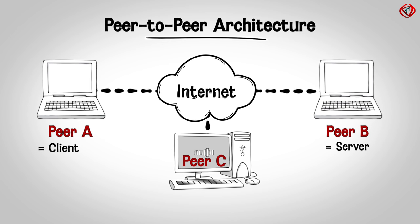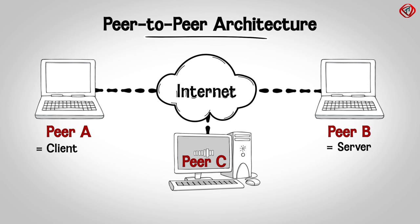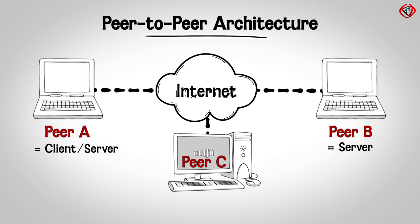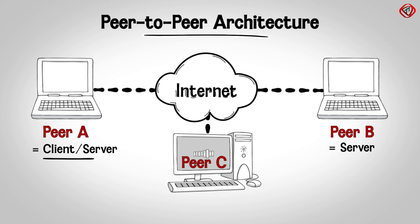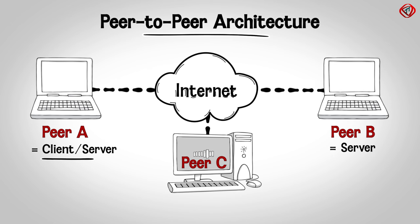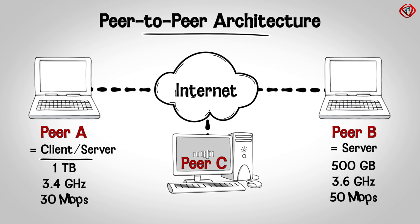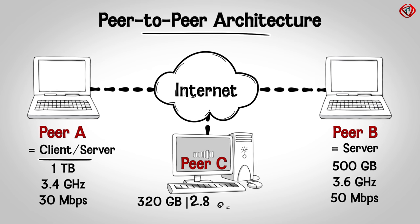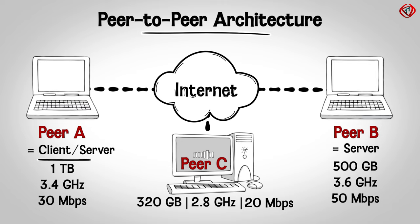Now when peer-C requests the same file, peer-A can also share the file. Therefore, peer-A will act as a server. This means that in P2P architecture, a peer can act both as a client and as a server. In P2P architecture there is no dedicated server. Each peer has its own storage, processing speed, and data transfer rate. As more peers join, they bring additional storage space, processing power, and data transfer rates to the network, increasing its overall capacity and capability. So P2P architecture is self-scalable.